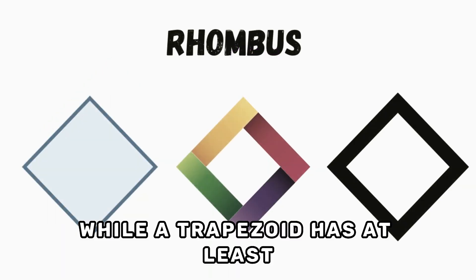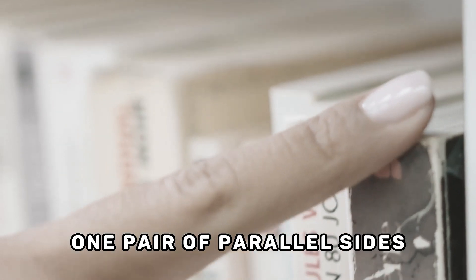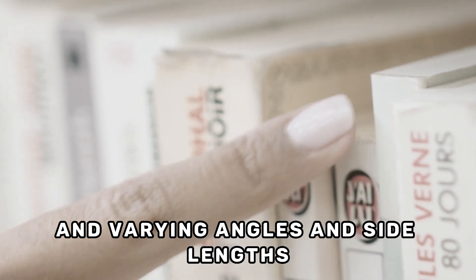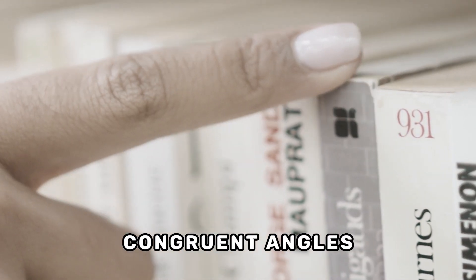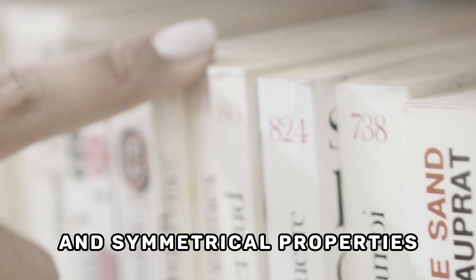While a trapezoid has at least one pair of parallel sides and varying angles and side lengths, a rhombus has all four sides equal in length, congruent angles, perpendicular diagonals, and symmetrical properties.